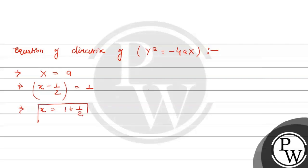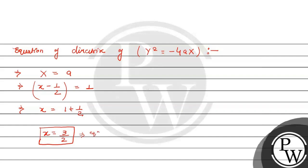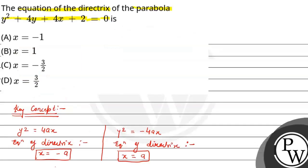This is the final value of x. Now let's see which option matches this value. Option D matches with our answer, so option D is the correct option. Hope you understood it well. All the best.